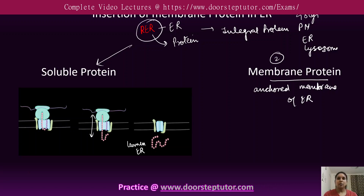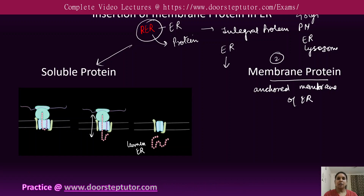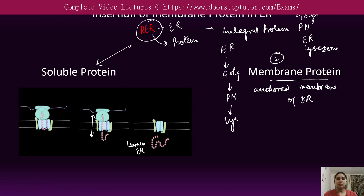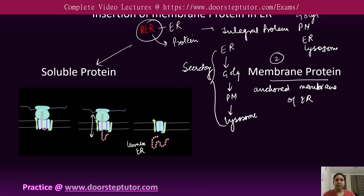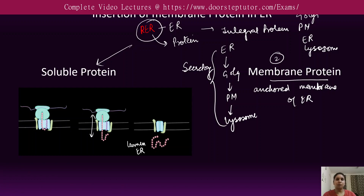From the endoplasmic reticulum, these proteins are transferred to the Golgi, either to the plasma membrane or to the lysosome. In this way they get transferred to other organelles, following the same secretory pathway as other proteins. The protein gets embedded inside the ER membrane and from there is translocated to the other organelles designated as its location.